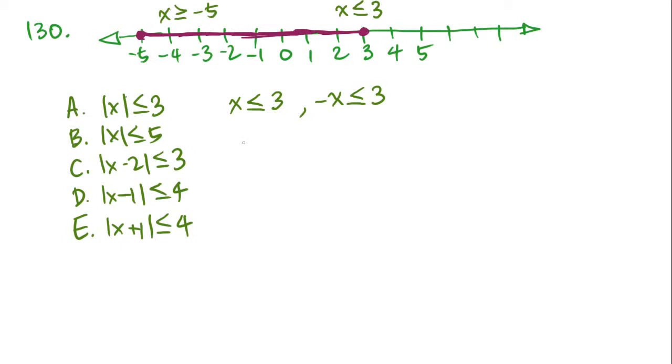Let's continue with B. x is less than or equal to 5. Well, right away we know that doesn't match any of the equations we have up here, so it's not B either. Let's try C. x minus 2 is less than or equal to 3. When we move 2 to the other side, we get x is less than or equal to 5. Again, that's not one of these two, so we take C out. And with D, we get x minus 1 is less than or equal to 4. We add 1 to both sides, we get x is less than or equal to 5. Again, that's not one of the answers, so we get rid of D.